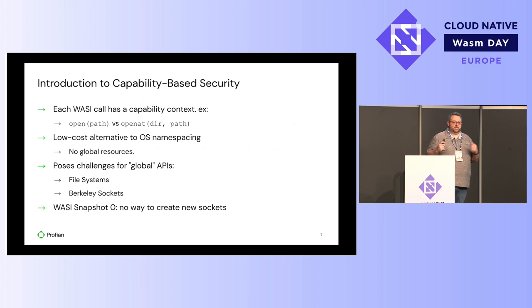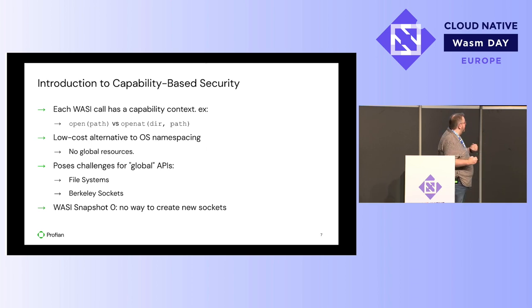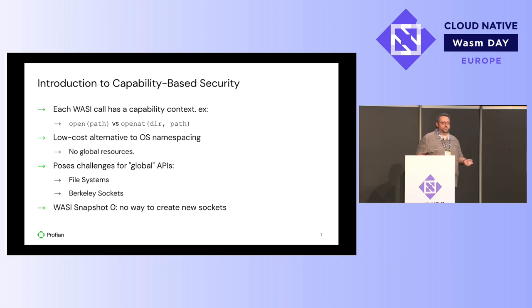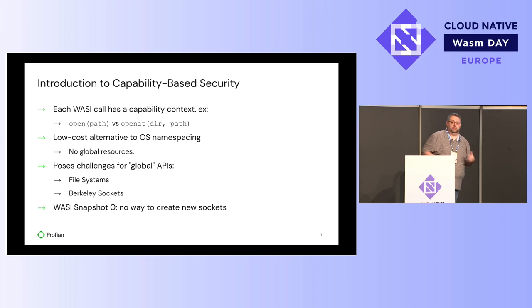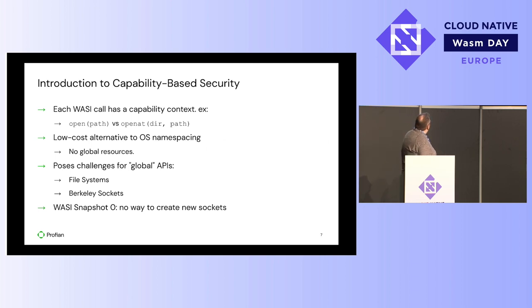Every time you call fork, you get a different address space for the process, meaning one application can't interfere with another's memory. The problem is nobody ever thought to extend this notion of privacy — what we'd call namespaces in the Linux kernel — to all other resources on the system. While you have a private view of memory, you have a global view of the file system, with access control only based on permissions. The same was true for networking: if you had access to one interface, you had access to all of them.